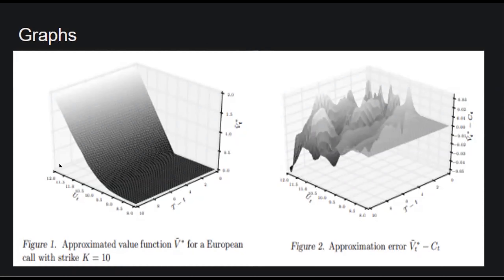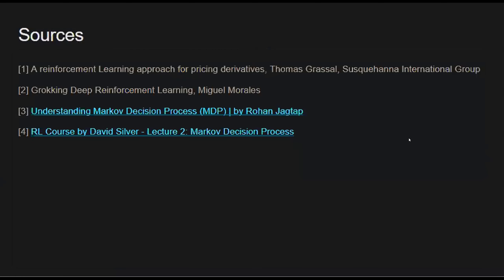They also show the approximation error, where C(T) represents the Black-Scholes estimation of the option's fair value. In some places the error varies widely, but for low underlying asset values and times close to expiration — where the T-minus-t axis is near zero — the approximation error tends to be almost zero, meaning the model is very accurate for those values. It would have been interesting if they had provided analysis to explain why that was the case. With that, those are the sources I used, and I'll now take any questions.